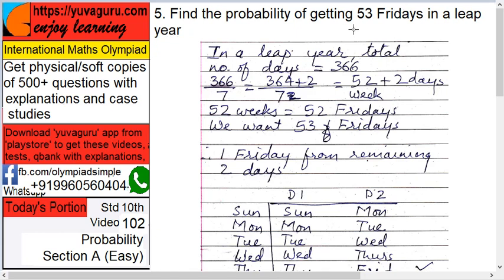Next, find the probability of getting 53 Fridays in a leap year. Okay. In a normal year, means...